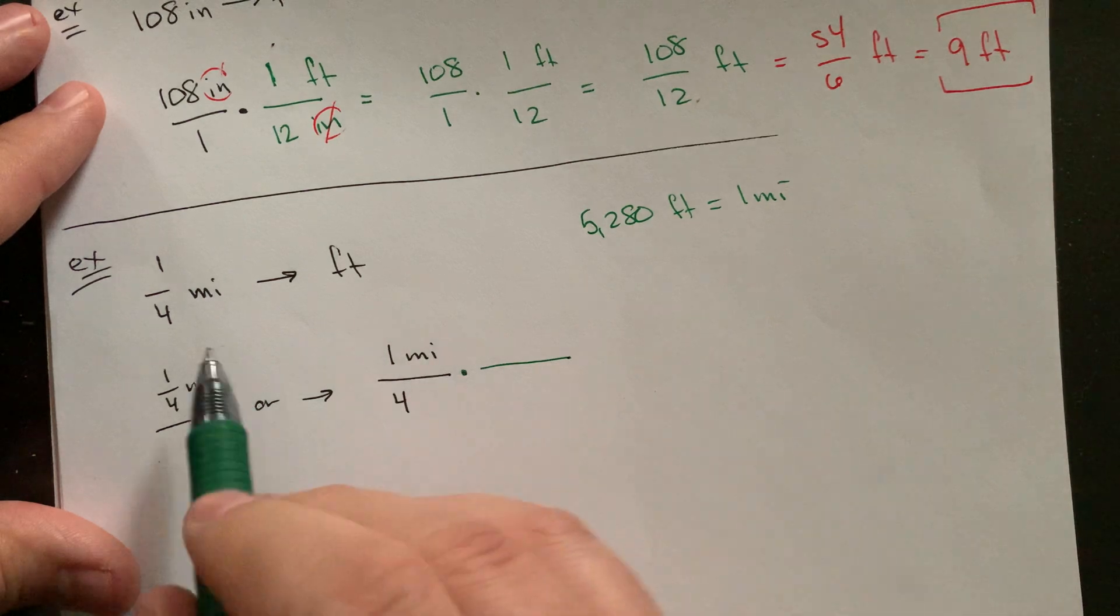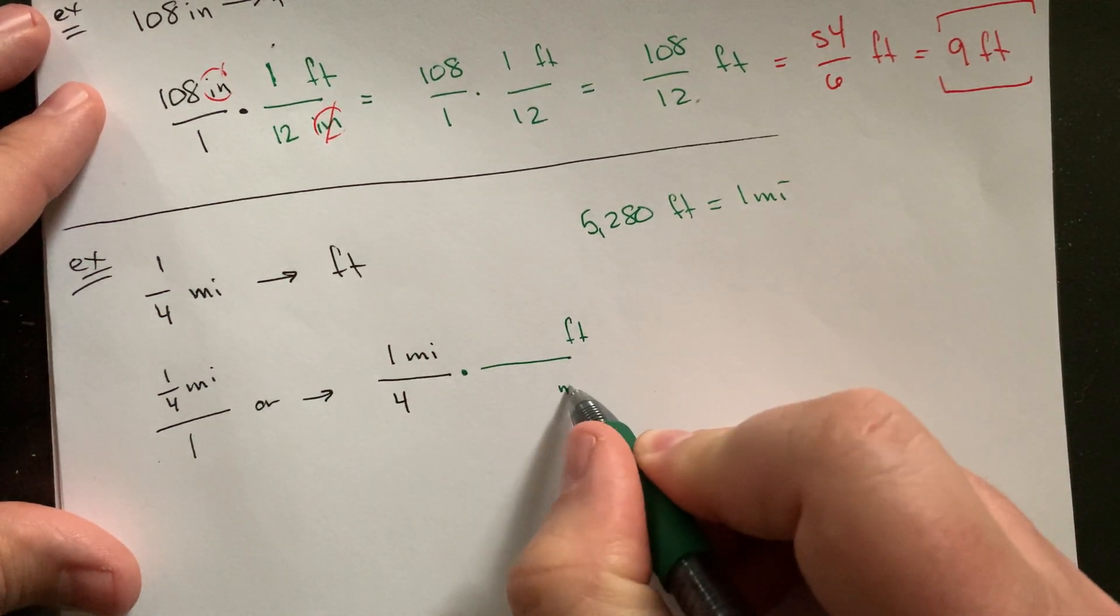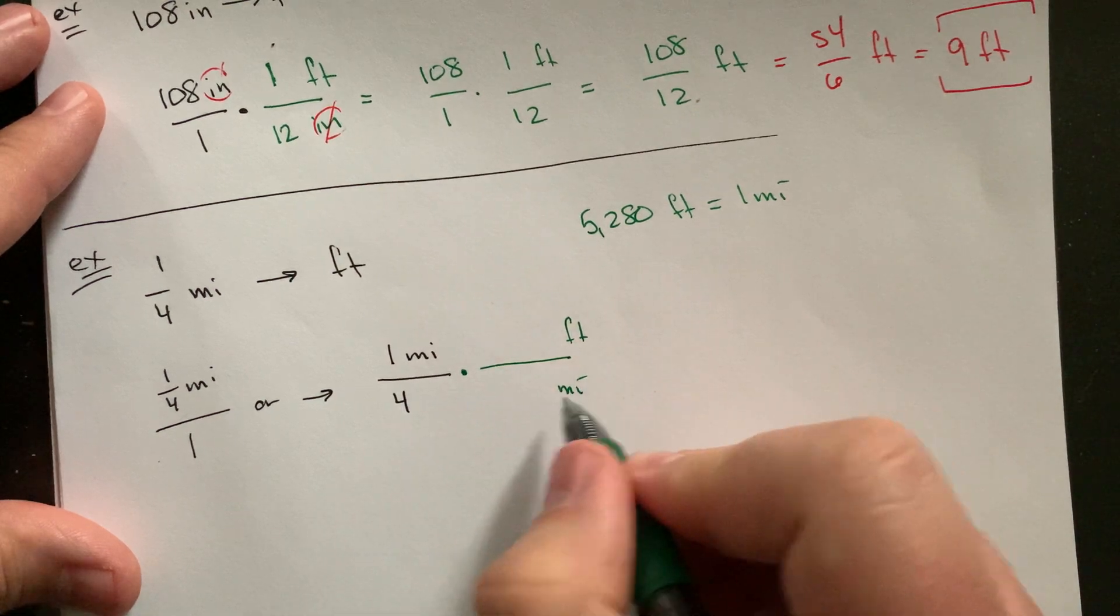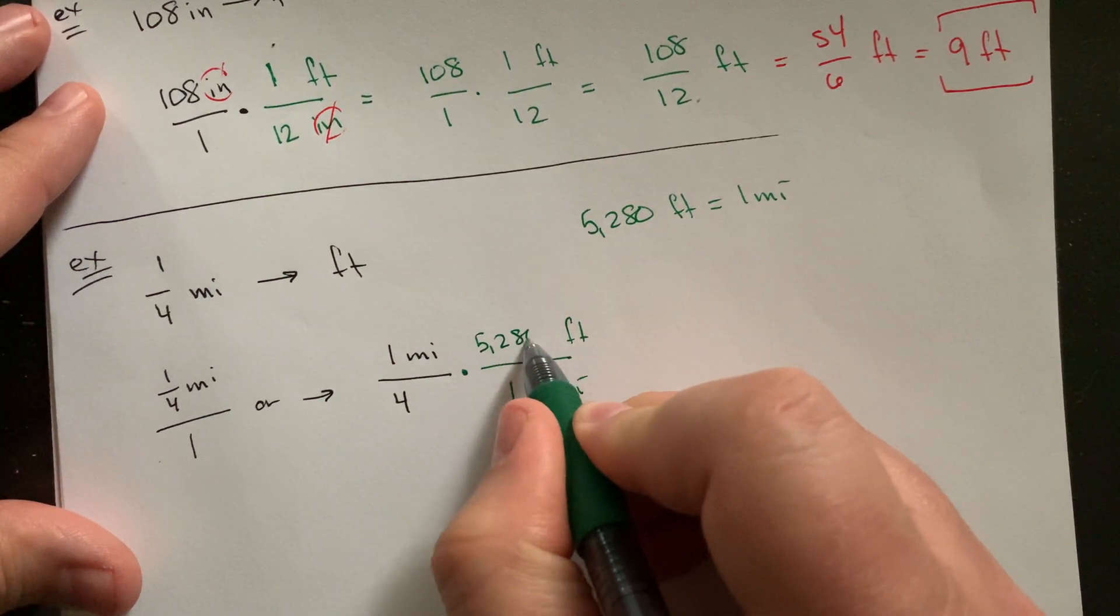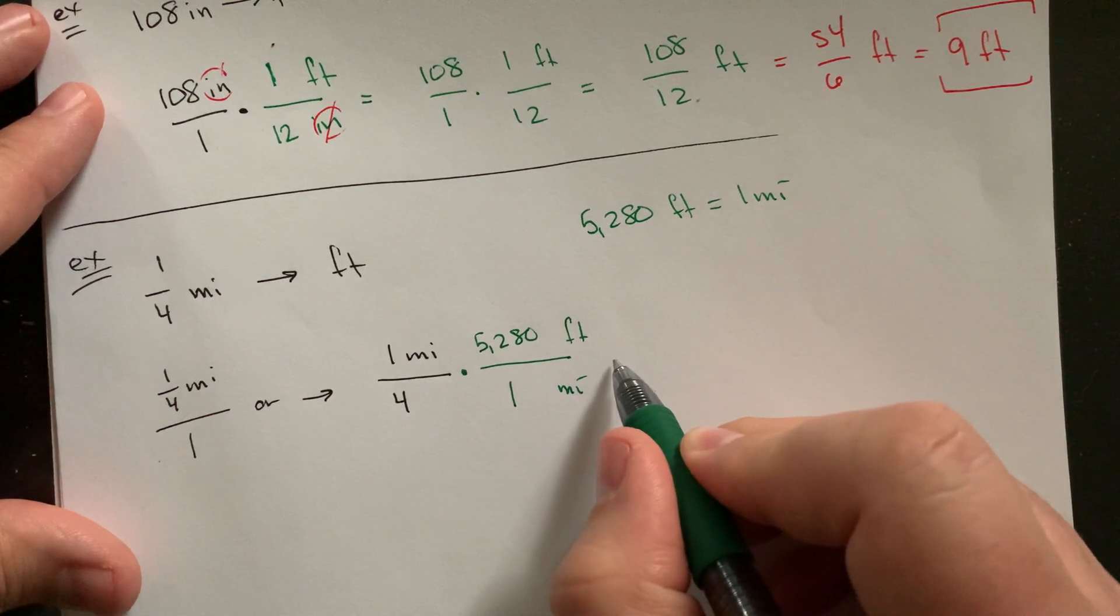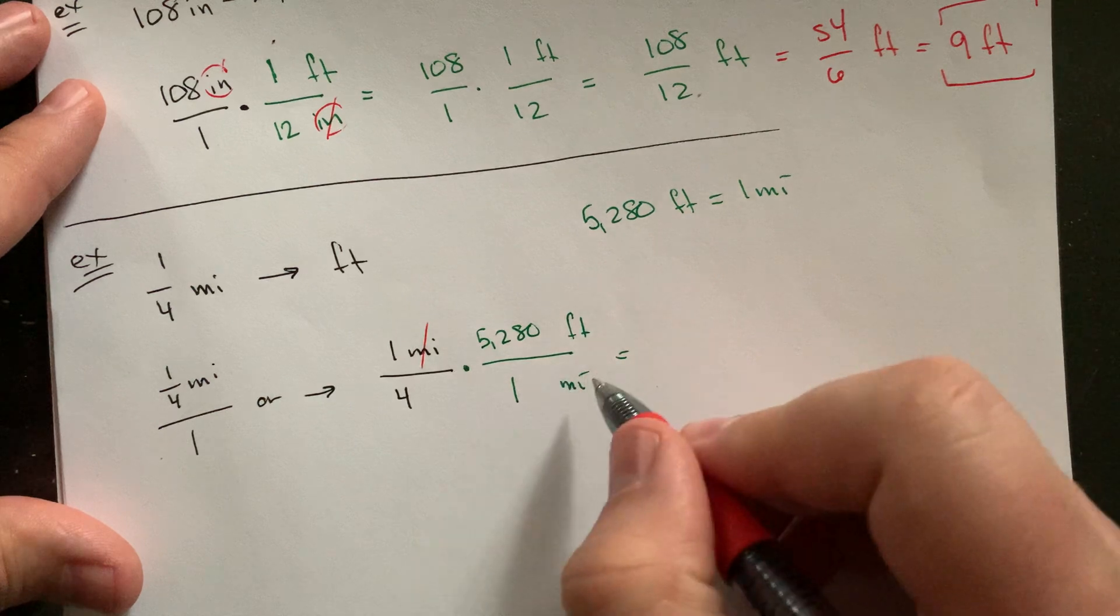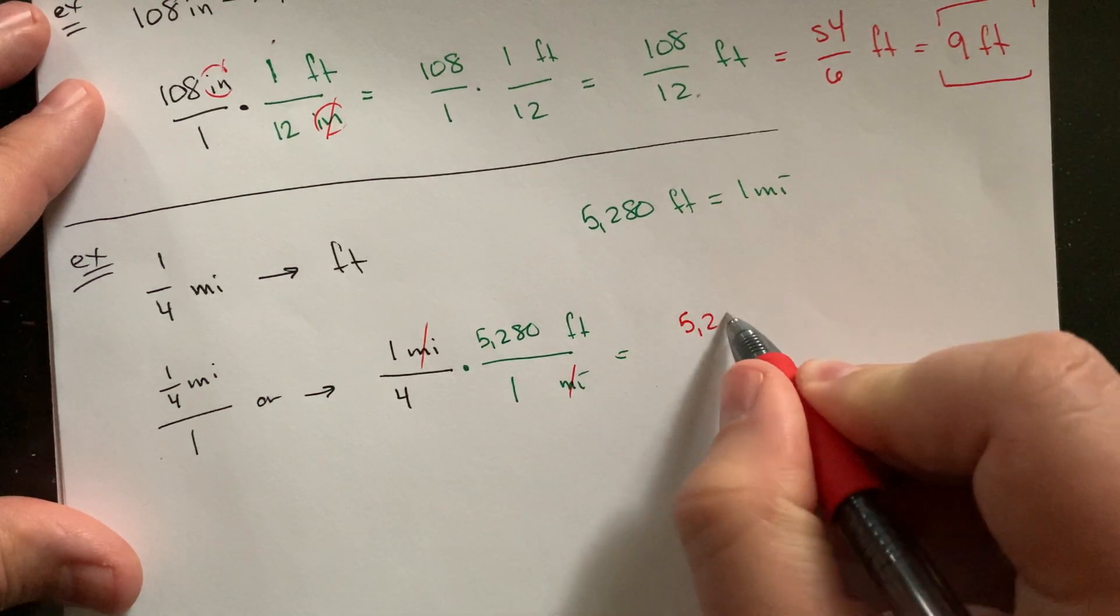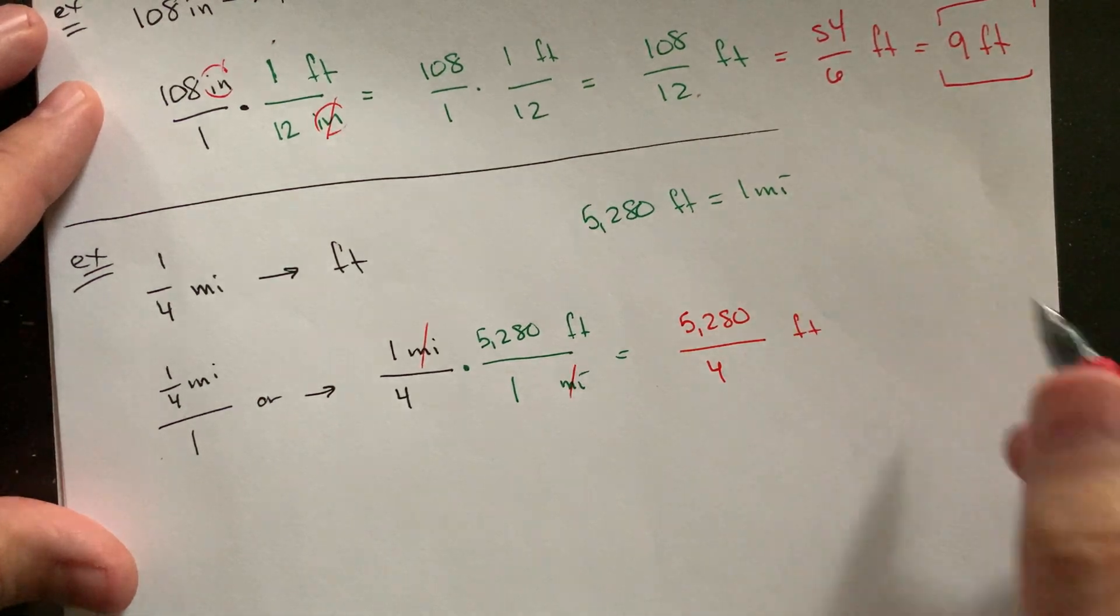And so what am I trying to convert? Miles into feet. So feet up top, miles on the bottom so that miles will cancel miles. And my rate here is one mile for every 5280 feet. And so you can kind of tell what's going to happen here. It's really just 5280 divided by four, feet.